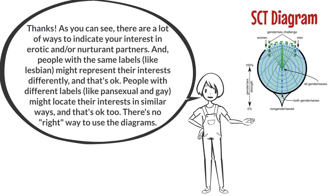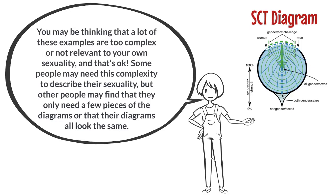As you can see, there are a lot of ways to indicate your interest in erotic and or nurturant partners. People with the same labels, like lesbian, might represent their interest differently, and that's okay. People with different labels, like pansexual and gay, might locate their interest in similar ways, and that's okay too. There's no right way to use the diagrams. Some people may need this complexity to describe their sexuality, but other people may find that they only need a few pieces of the diagrams, or that their diagrams all look the same.